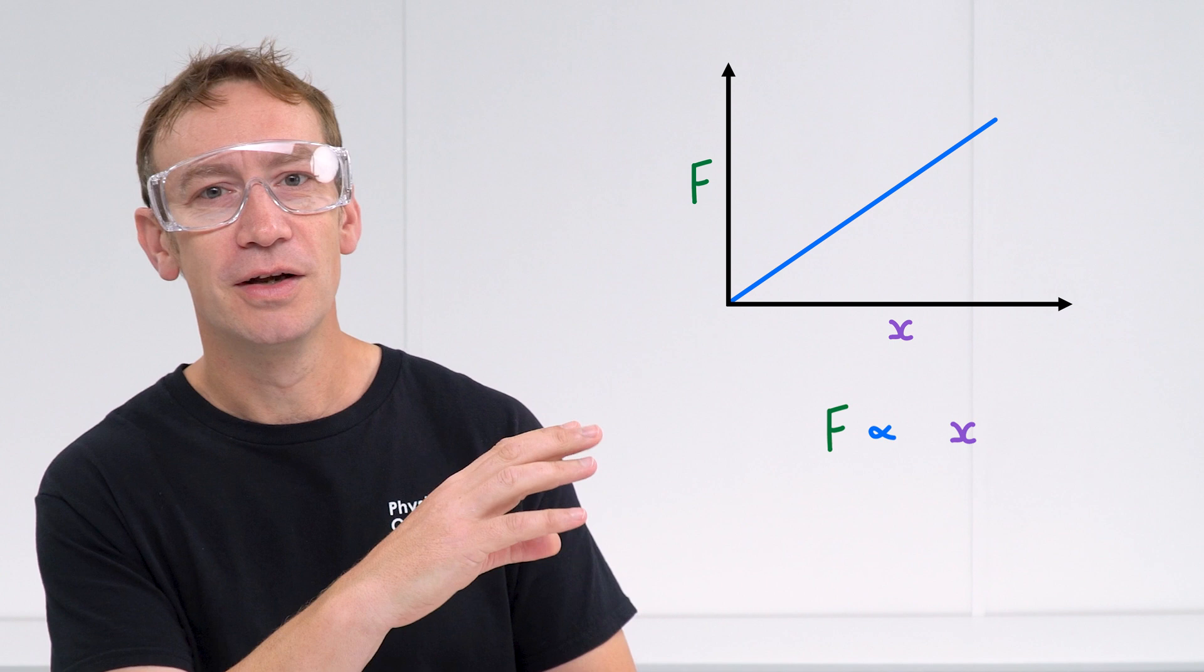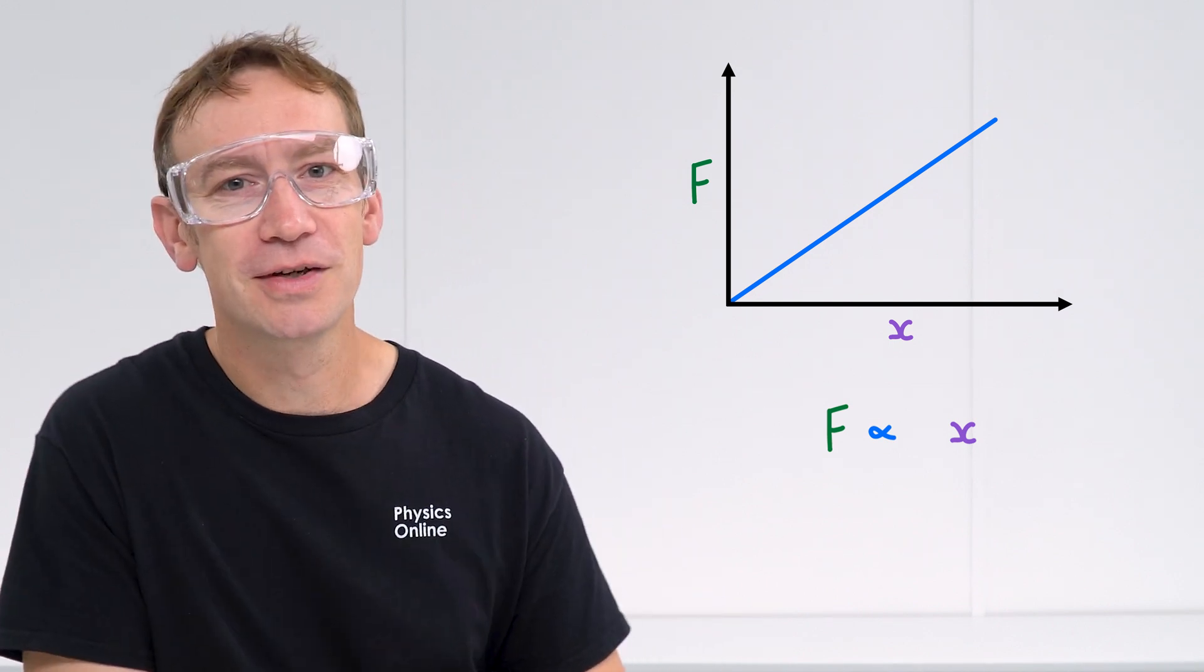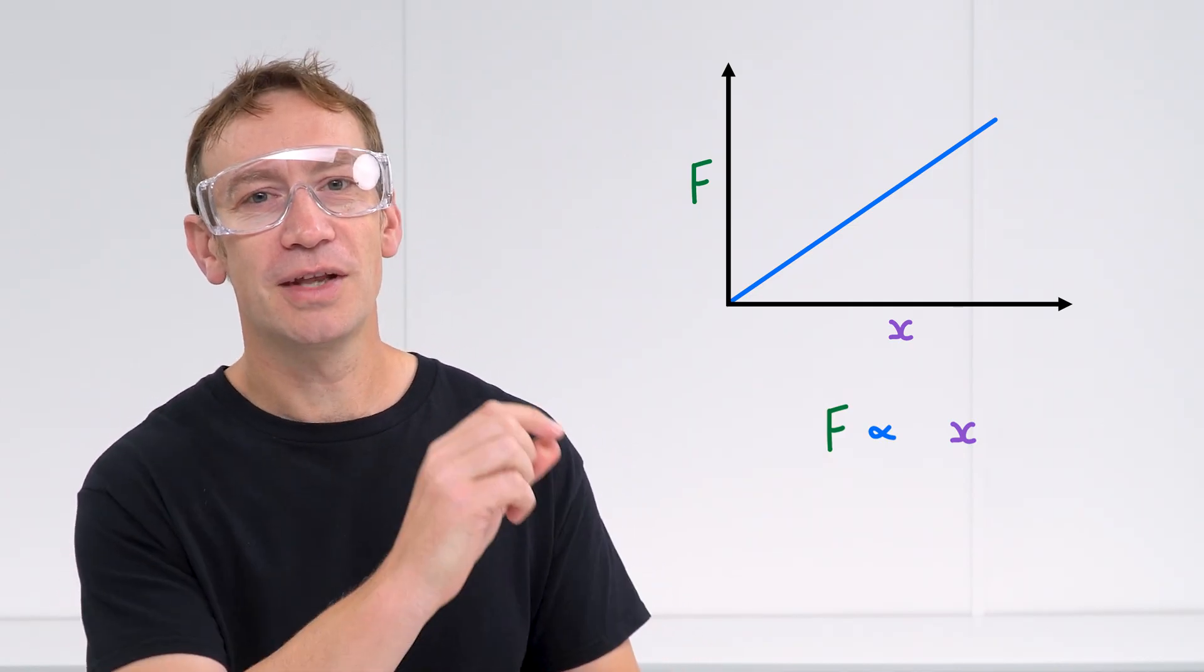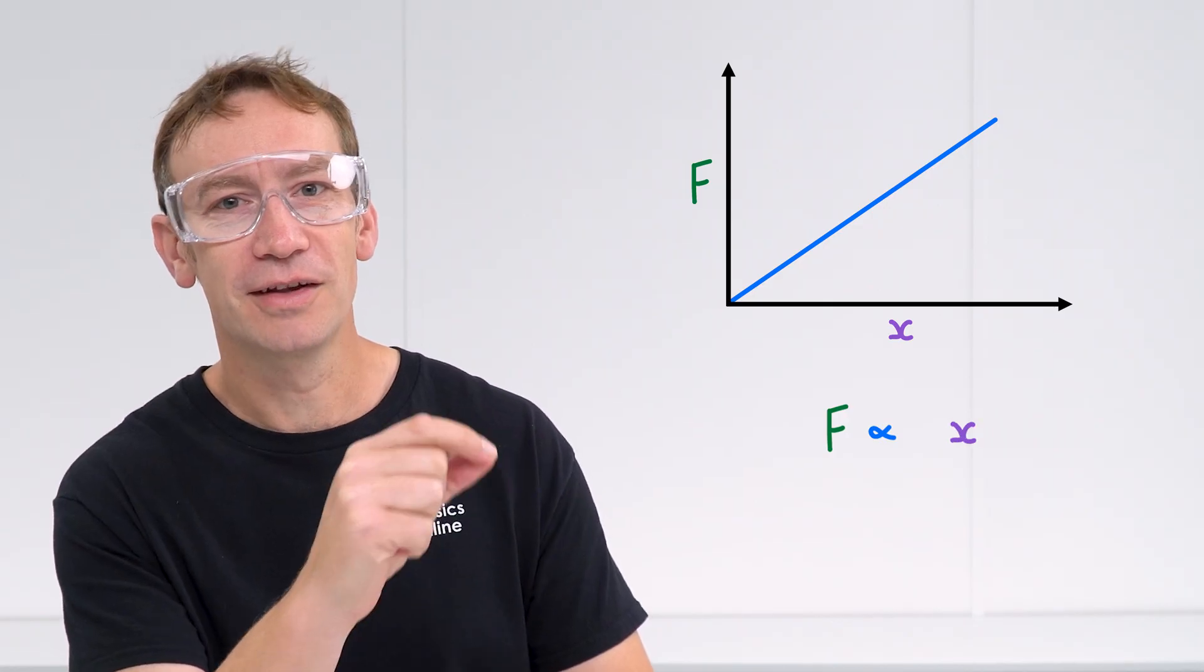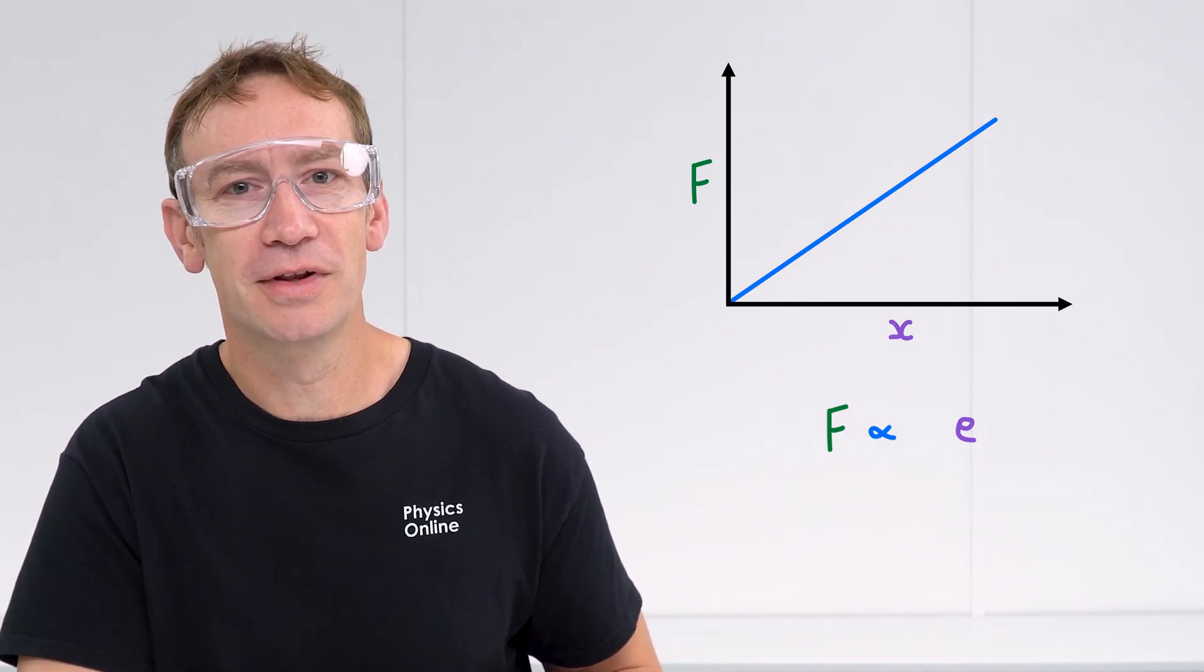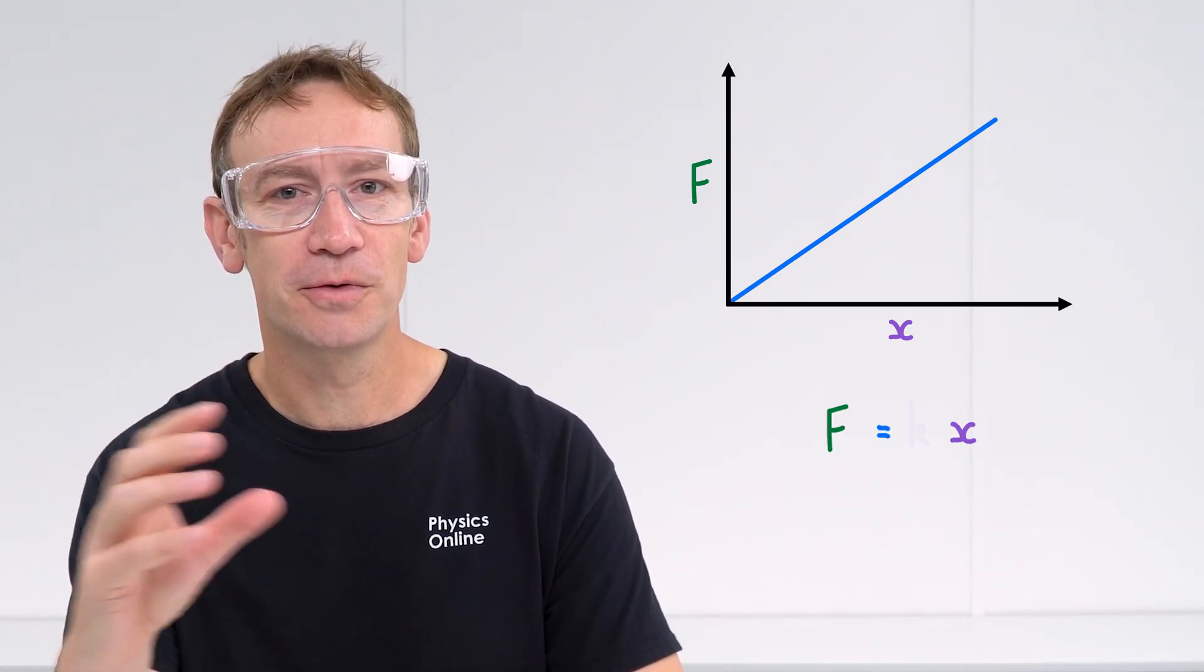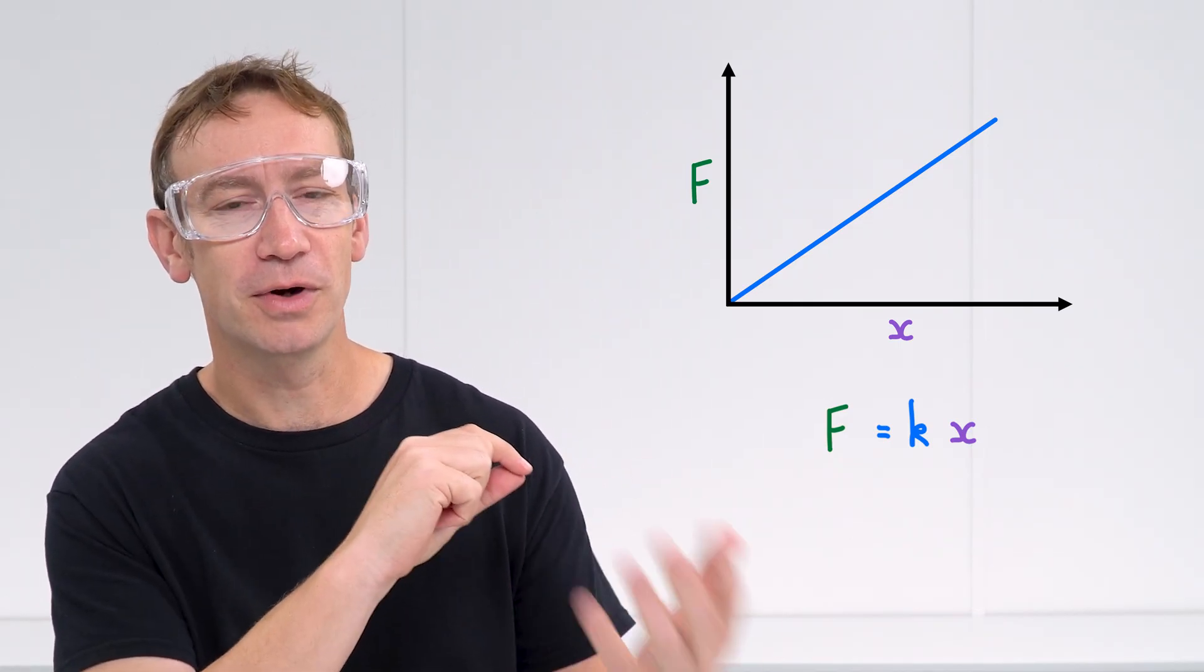So this region where the force is proportional to extension—and it's just worth pointing out that different exam boards use a different letter for the extension. Sometimes they use delta L for that change in length, sometimes it's X, sometimes it's delta X, sometimes it's a little e. It doesn't matter. What we're saying is that the force is proportional to the extension, and because we can say that F equals KX, where K is the spring stiffness or the spring constant.